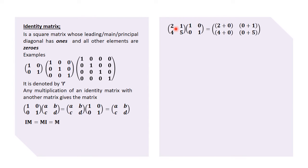Continuing: 2 times 0 gives 0, and 1 times 1 gives 1; then 4 times 0 gives 0, and 5 times 1 gives 5. Simplifying this gives us the matrix [2, 1; 4, 5] — the original matrix. This confirms that multiplying a matrix by the identity matrix simply gives back the original matrix.